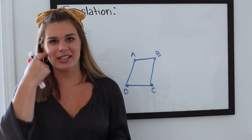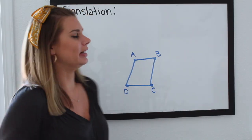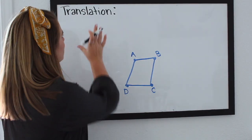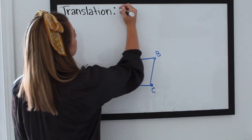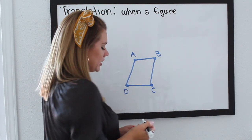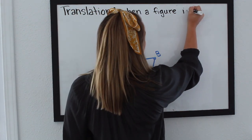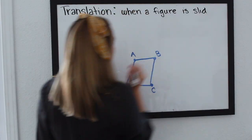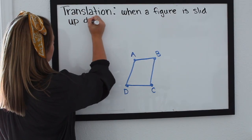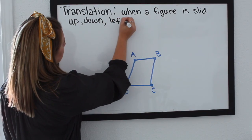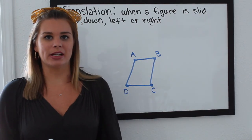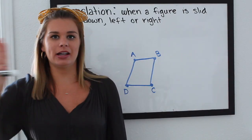The next one we're going to go through is a translation. So when we translate a figure, we are basically moving or sliding it. A translation is when a figure is slid up, down, left, or right, but without changing its orientation. You're really just sliding it across the plane.